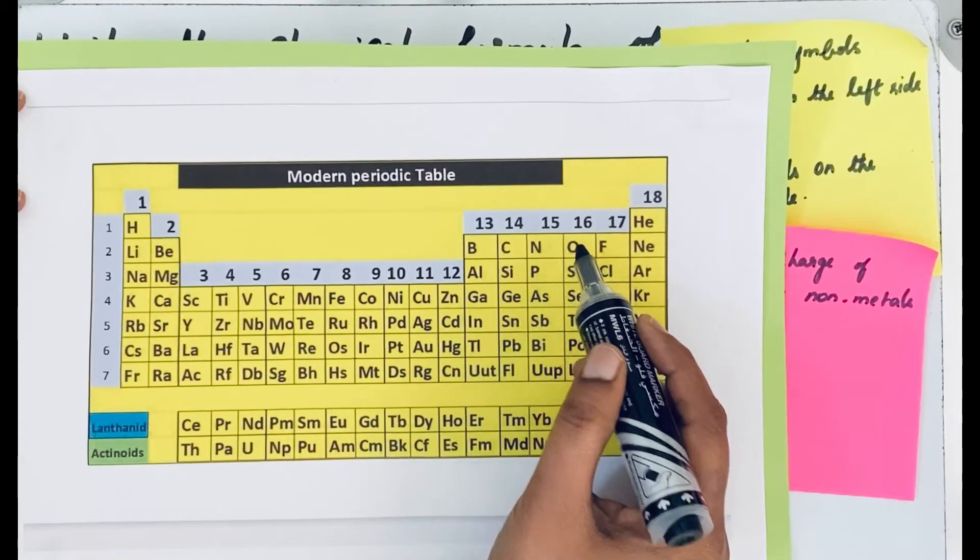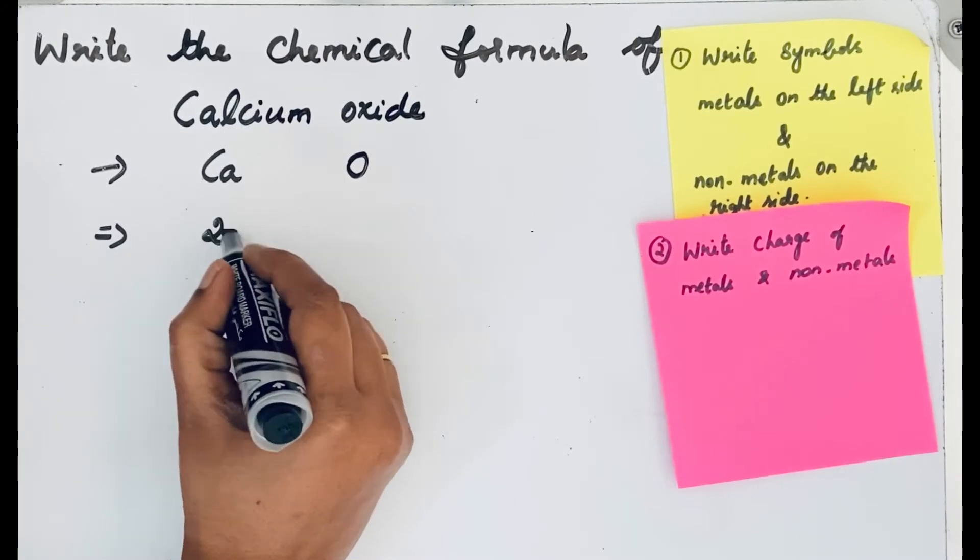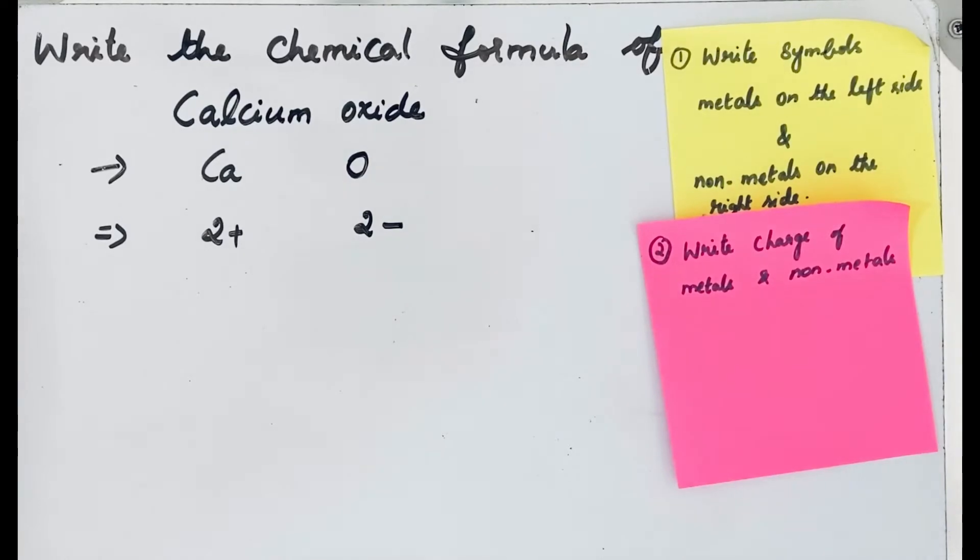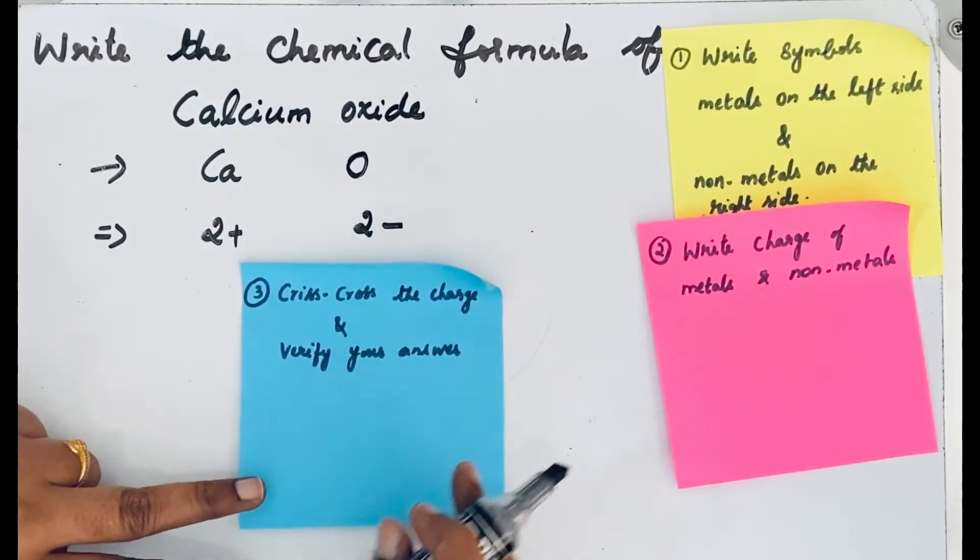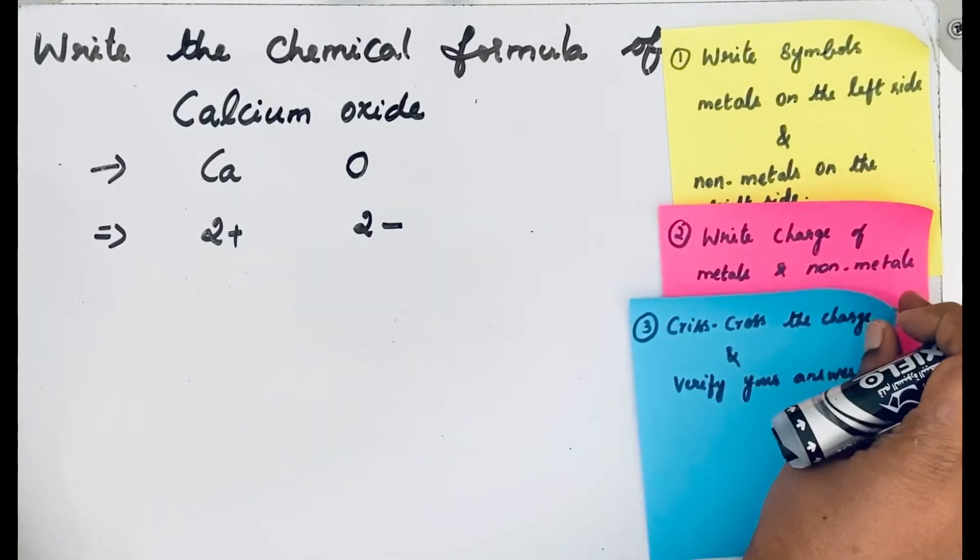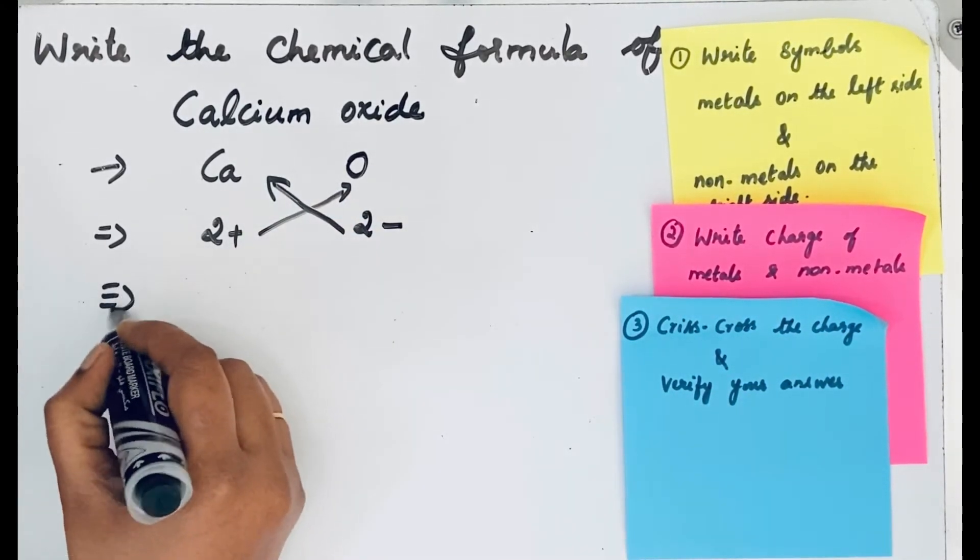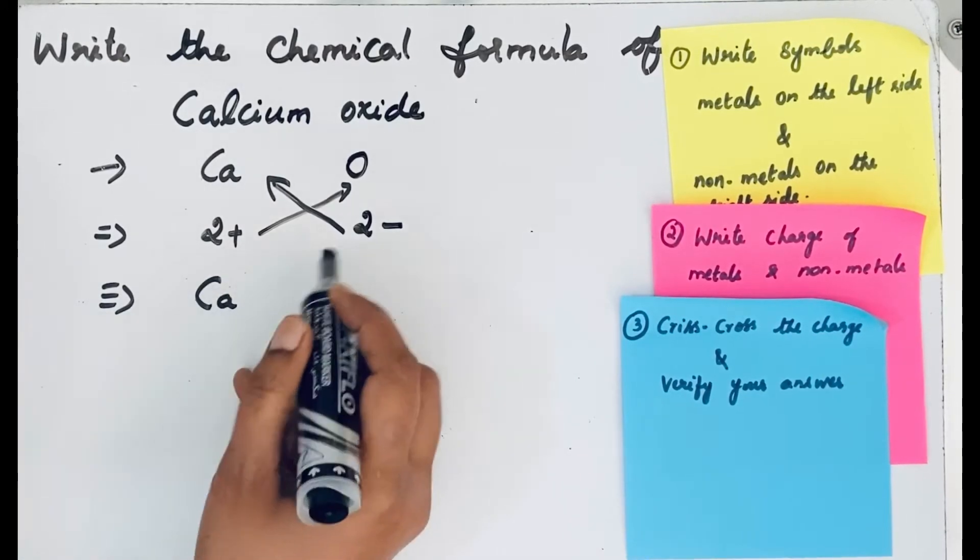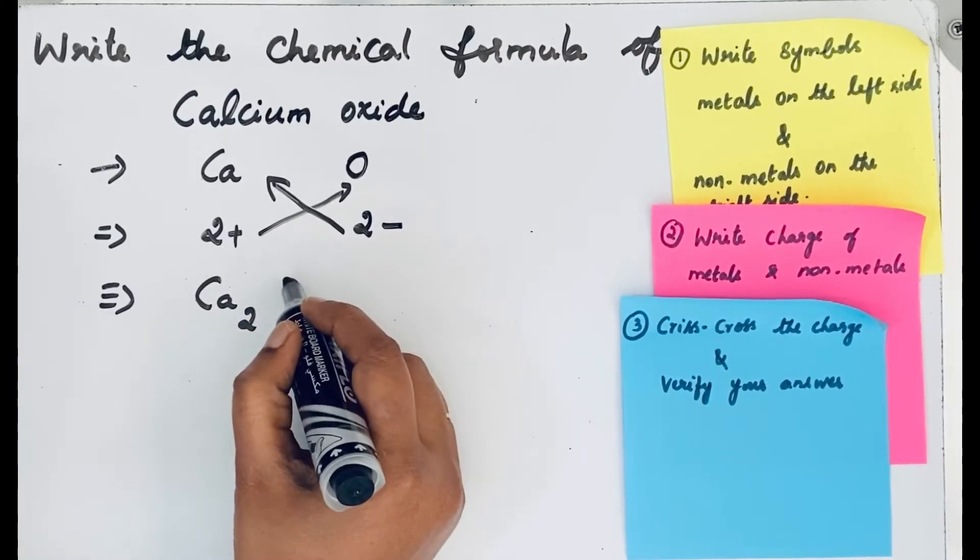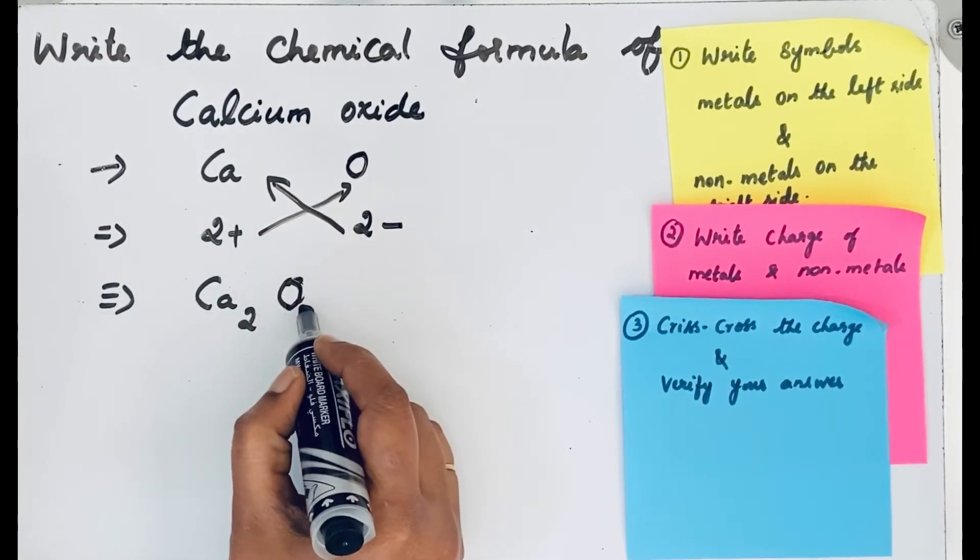After writing the charge, the next step is to criss-cross the charge and verify your answer. When you cross the charge, you will get Ca2O2 - the 2 will come as a subscript here, and the 2 will come as a subscript here. We are not indicating any charges in the chemical formula.